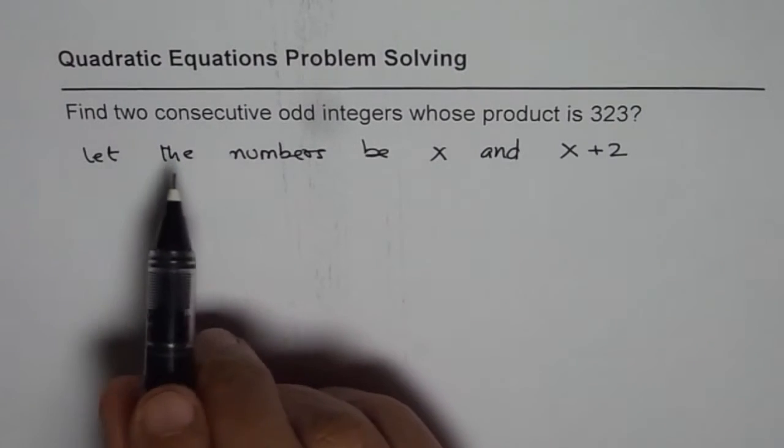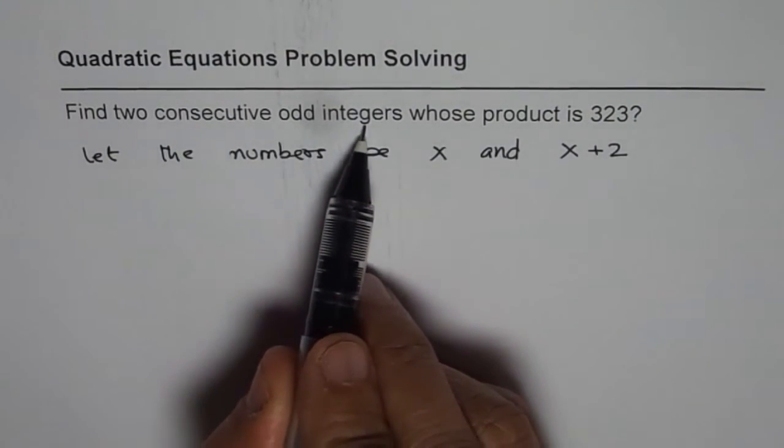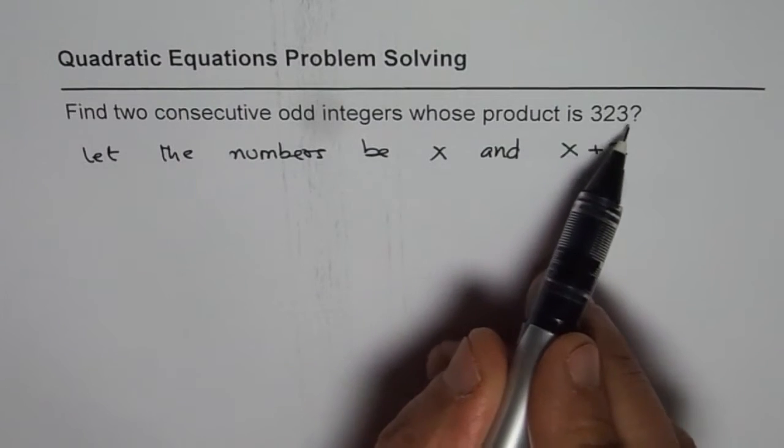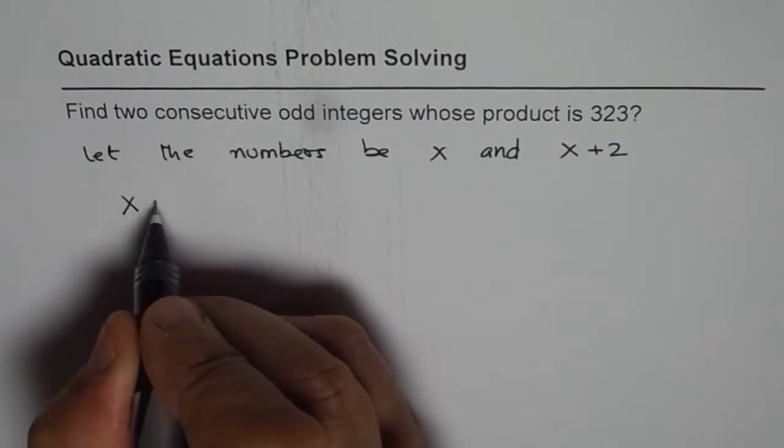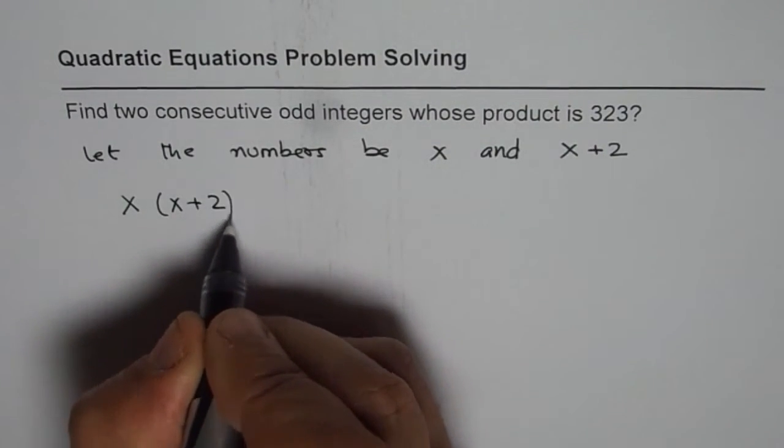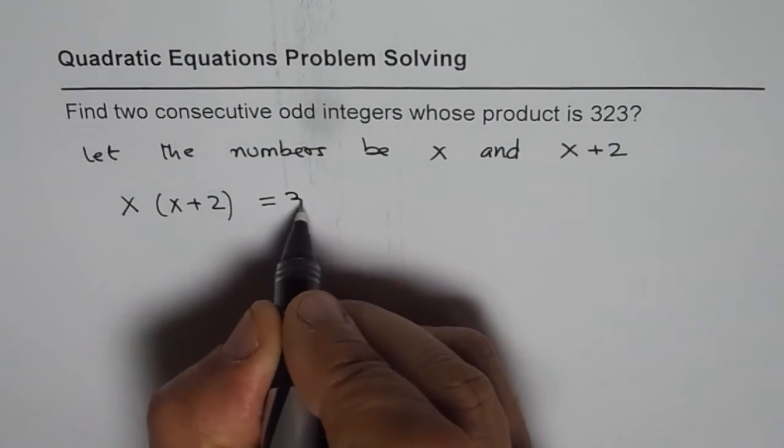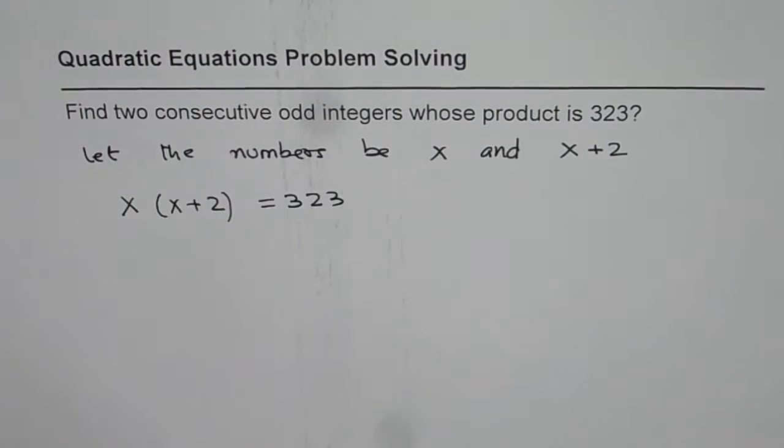Now the question is, find two consecutive odd integers whose product is 323. That means, if you multiply x by x plus 2, you should get 323. That is the question.